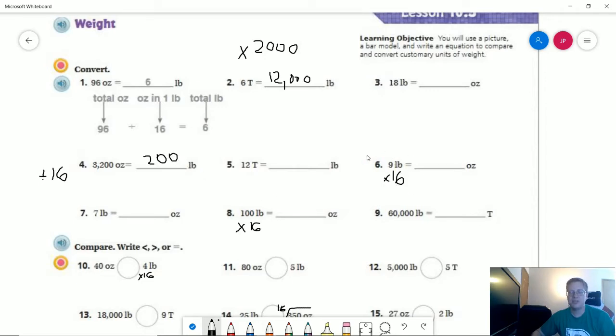Number six, I can multiply 9 times 16. So 10 times 16 is going to give me 90, 9 times 6 is going to give me 54, and then I can add those together, and that would give me 144.